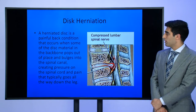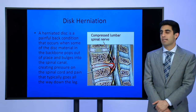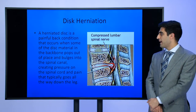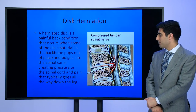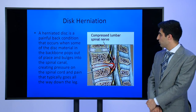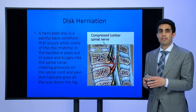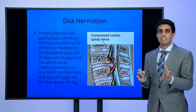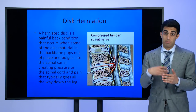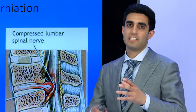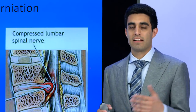A disc herniation — also described as a slipped disc — is a painful back condition that occurs when some of the disc material in the backbone pops out of place and bulges into the spinal canal, creating pressure upon the spinal nerves and pain that typically goes all the way down the leg. One important thing to note: in the lumbar spine there is no spinal cord — only a collection of nerve rootlets — so there is no serious concern for paralysis from a small disc herniation. However, disc herniations, disc bulges, and bone spurs can press upon the sac that holds these nerves and cause significant discomfort.